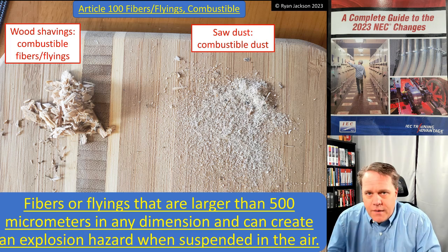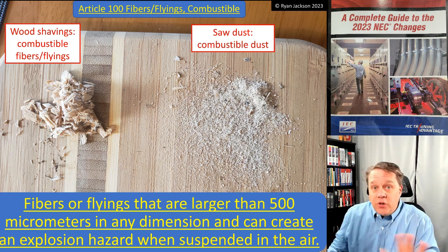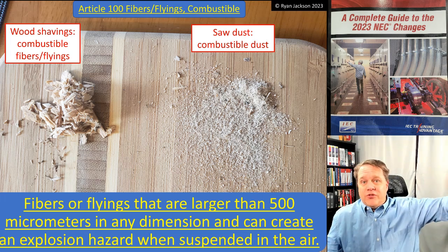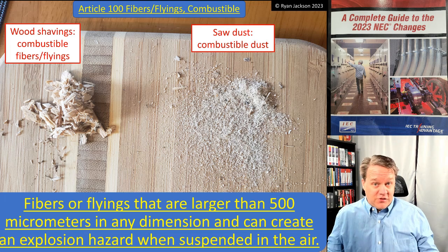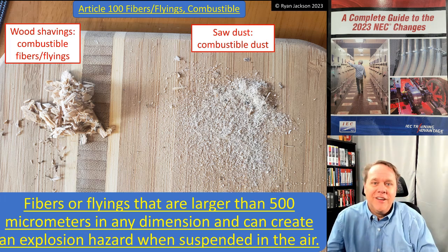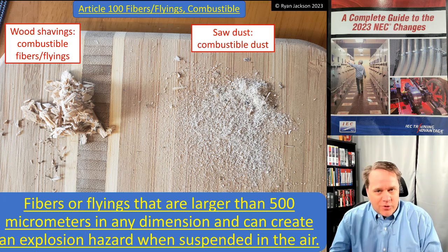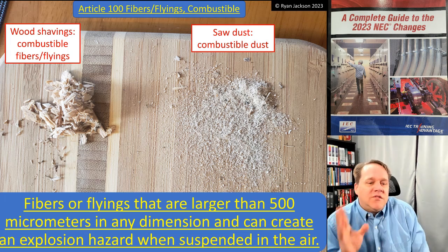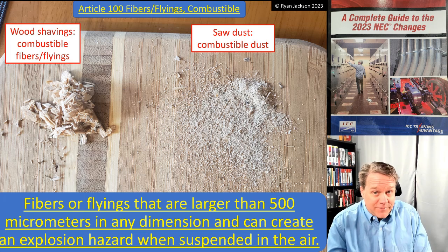500 micrometers may not mean much without a reference point. The code used to reference microns, which is an older unit of measurement — similar to how stones were once used instead of pounds in the UK. Microns is not a term we really use anymore; we use micrometers. A helpful reference: ground coffee is about 500 micrometers.